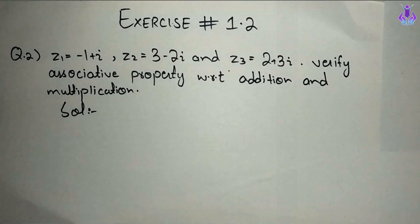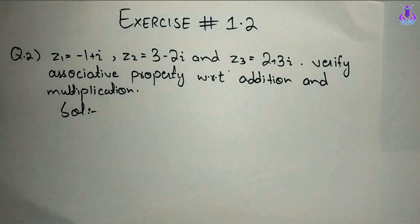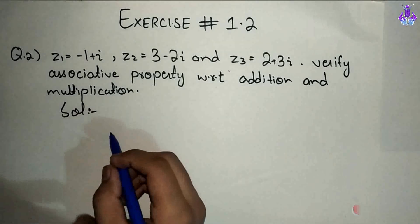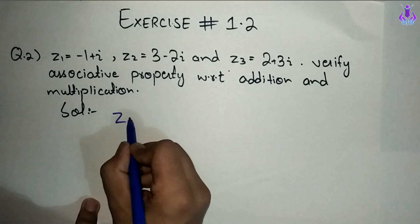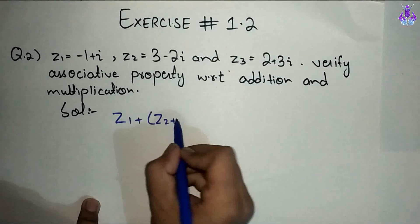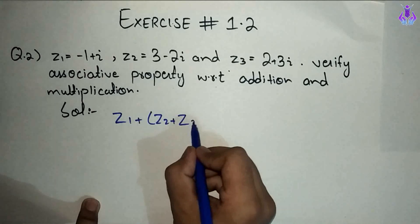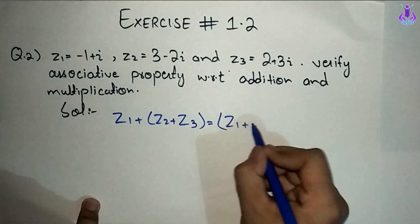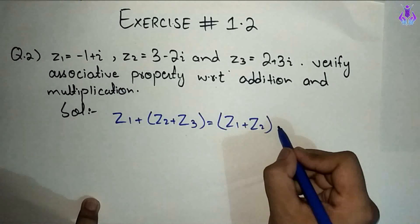Hum logon ne associative property verify karni hai. Isse pehle wale question mein hum logon ne commutative property padhi thi with respect to addition and multiplication. Aaj hum log associative property padheinge with respect to addition and multiplication. Associative property hamare paas kya hai: z1 plus (z2 plus z3) is equal to (z1 plus z2) plus z3.